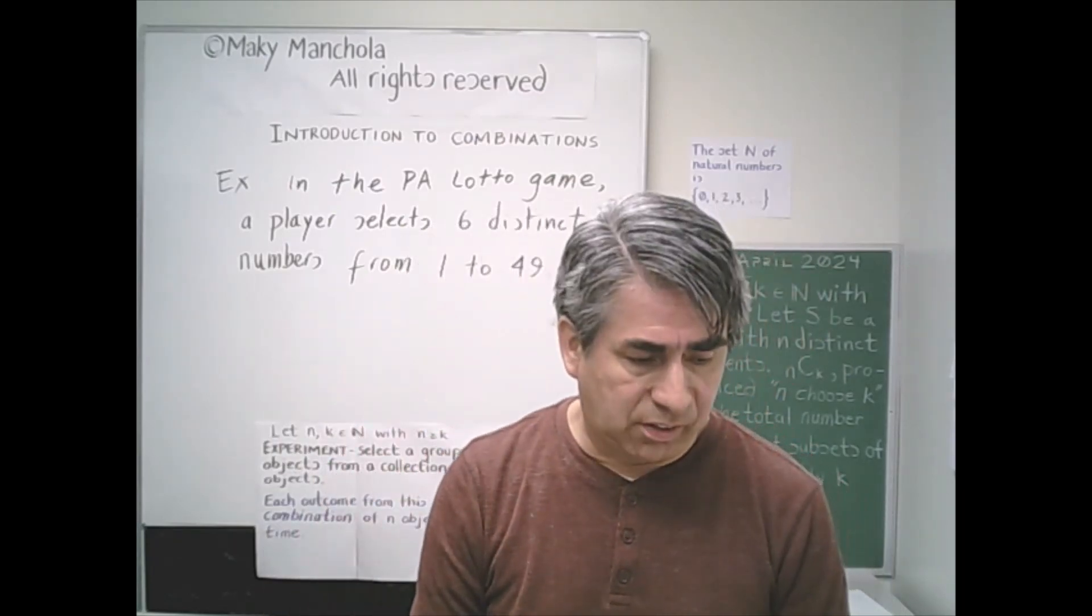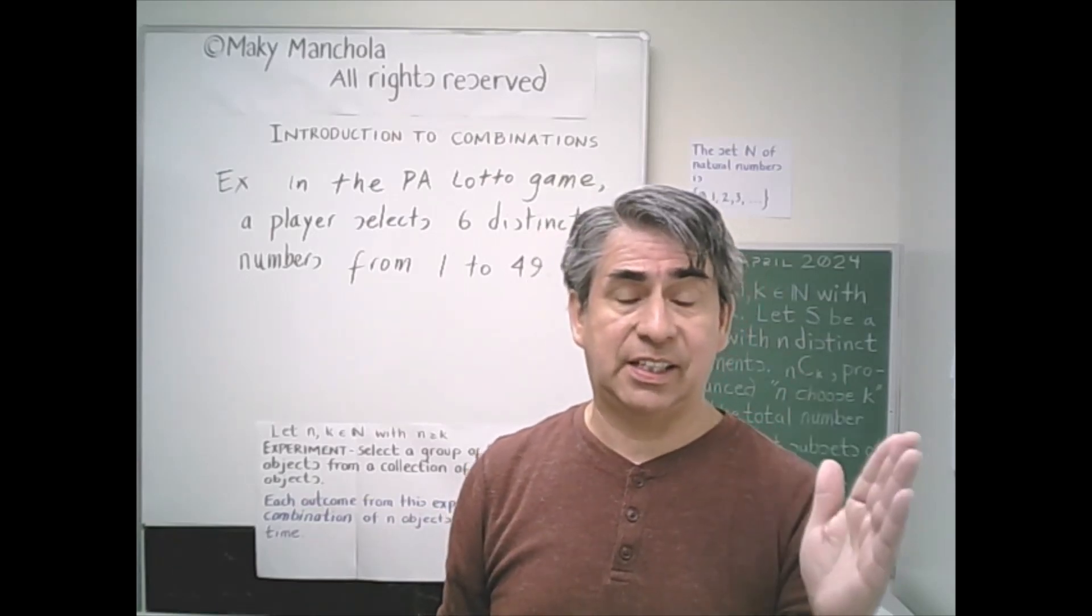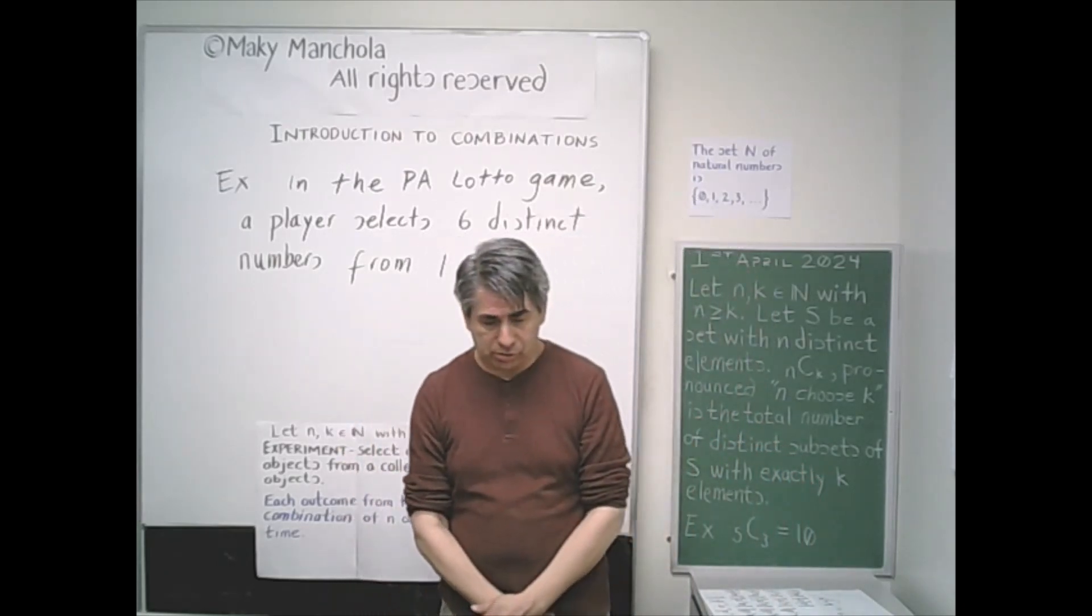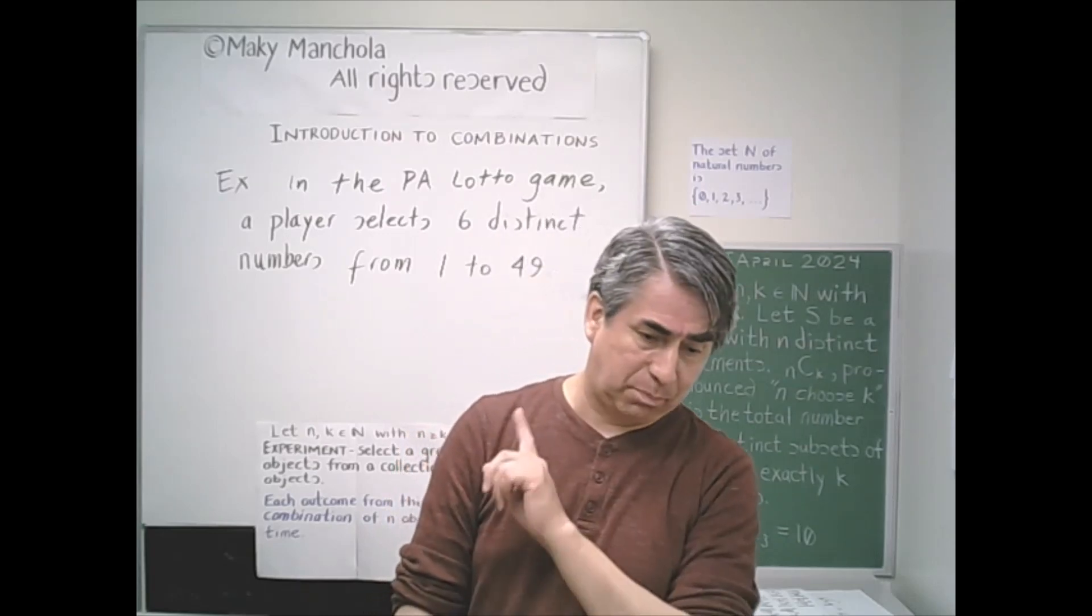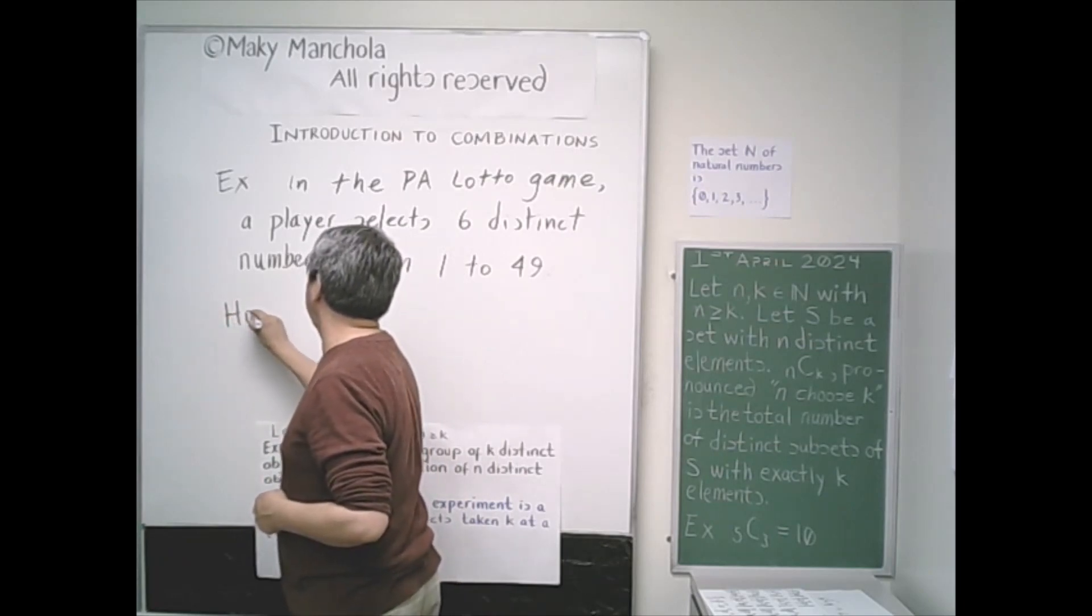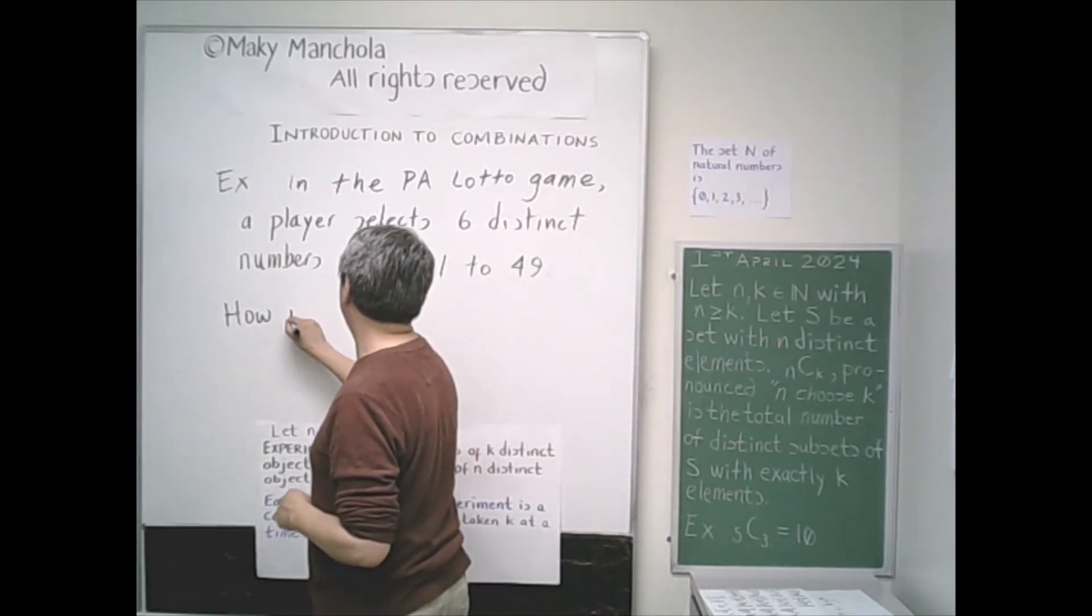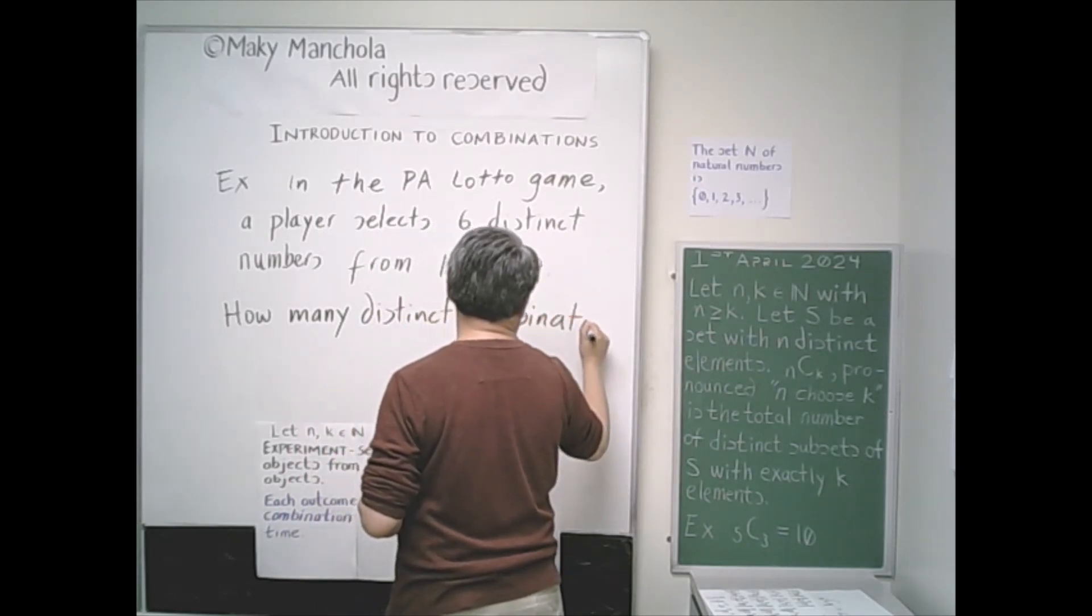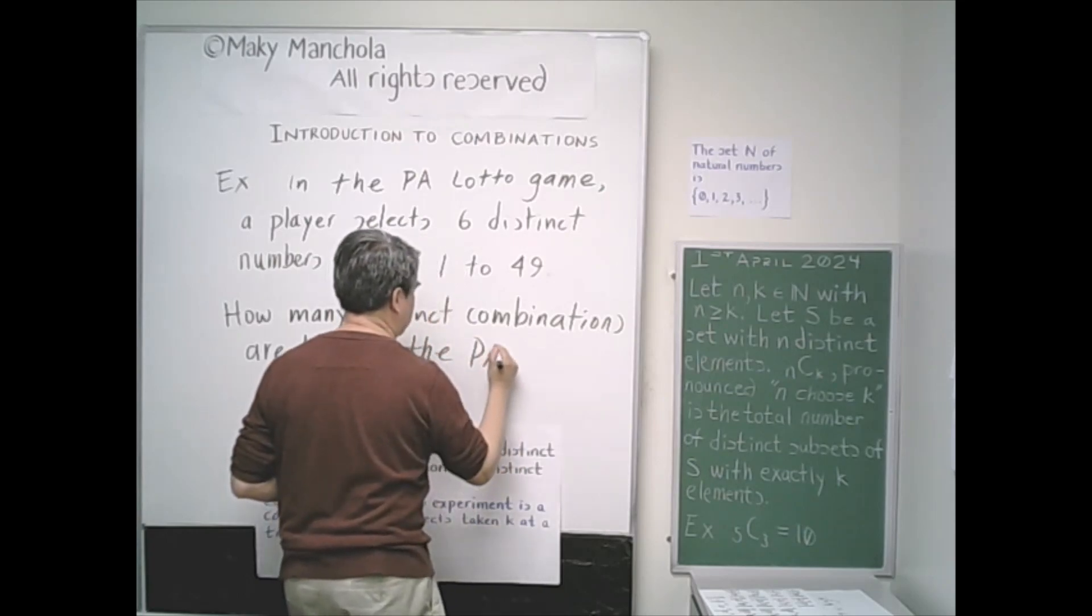In the Pennsylvania Lottery game, a player selects six distinct numbers from 1 to 49. The order is irrelevant. If you pick 1, 2, 3, 4, 5, 6, that is the same as if you had picked 6, 5, 4, 3, 2, 1. So the Pennsylvania Lotto is a game of combinations. So here is our question: How many distinct combinations are there in the Pennsylvania Lotto?